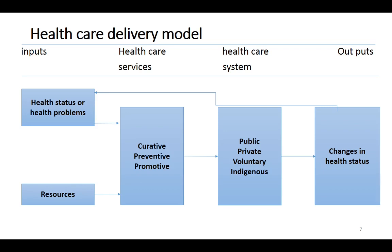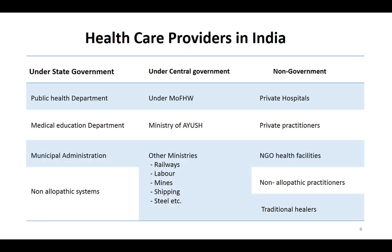The healthcare system can be public, private, voluntary, or indigenous. Public is through the government, private is the private sector, voluntary includes NGOs, and indigenous includes AYUSH. These four systems provide curative, preventive, and promotive services, and the changes we see in health status are the output.